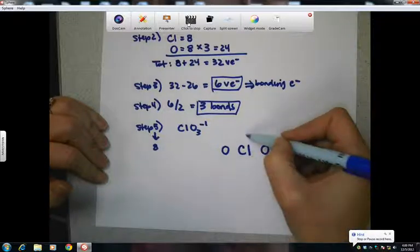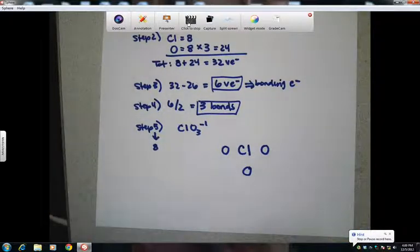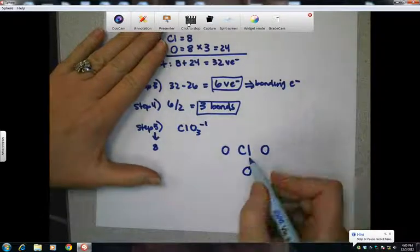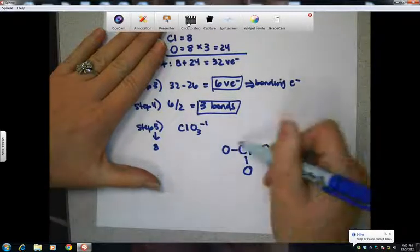And then we're going to just surround it with our oxygen. So I'll put one here and one here. And you can put one up here or one down here. It's really just up to how you like it. And we're going to look back up here and remember there are going to be three bonds.